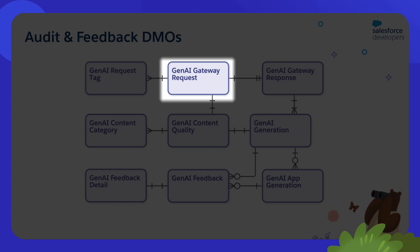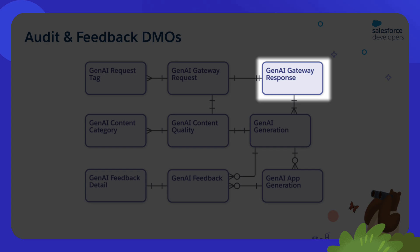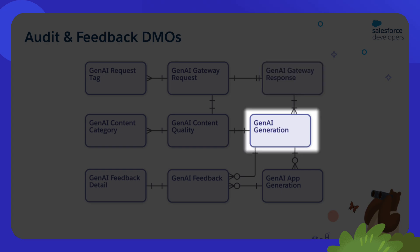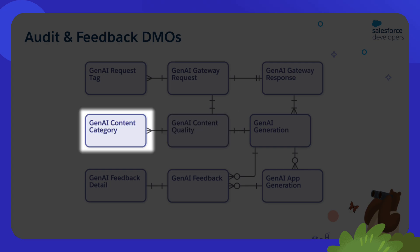The data model objects in which audit data is stored are: Generative AI Gateway Requests, which captures incoming requests; Generative AI Request Tags, which captures tags used to categorize requests; Generative AI Gateway Response, that stores responses generated by the system; Generative AI Generation, that details specific generative AI outputs; Generative AI Content Quality, that evaluates the quality of generated content; and Generative AI Content Category, that categorizes content based on various safety and quality metrics.